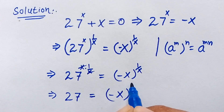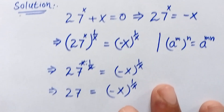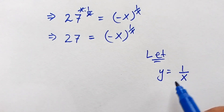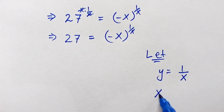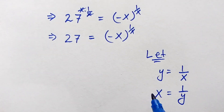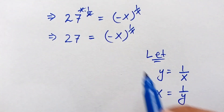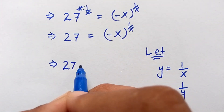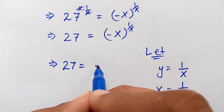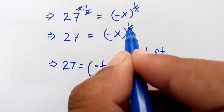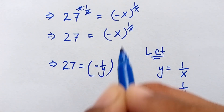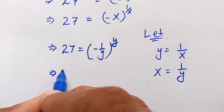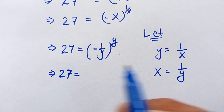To solve this, let's suppose y is equal to 1 over x, and from this we know x is equal to 1 over y. So here we put the value of x, which is 1 over y: 27 is equal to minus 1 over y, and to the whole power of 1 over x. Here, 1 over x is equal to y, so we put y in place of 1 over x. So: 27 is equal to minus 1 over y to the power of y.